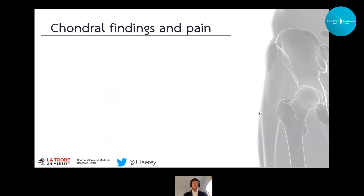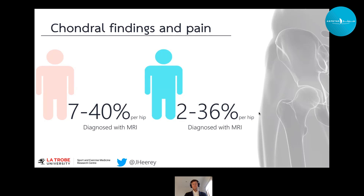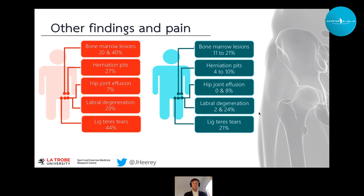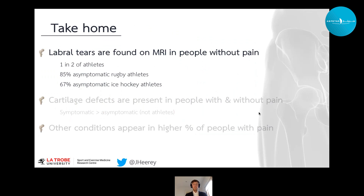This represents a huge gap in the literature. For chondral findings, we found a range of prevalences, and when looking at individuals of the same age participating at the same level of activity, it appears that cartilage findings may be equally prevalent in those with and without symptoms. For select features, we saw a trend of higher prevalence in active athletes with hip and groin pain compared to those without, but we were unable to pool these studies.